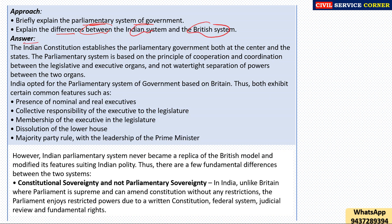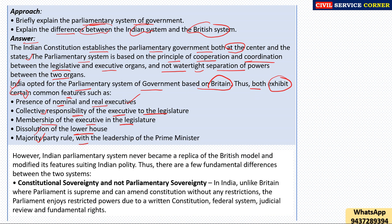The Indian constitution establishes parliamentary government both at the center and the states. The parliamentary system is based on the principle of cooperation and coordination between the legislative and executive organs, and not a watertight separation of powers between the two. India opted for a parliamentary system of government based on Britain, and both exhibit certain common features such as the presence of nominal and real executive, and collective responsibility of the executive to the legislature.